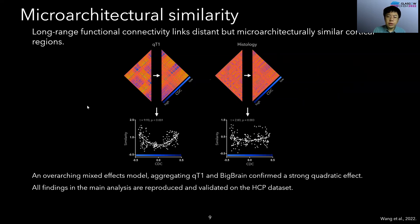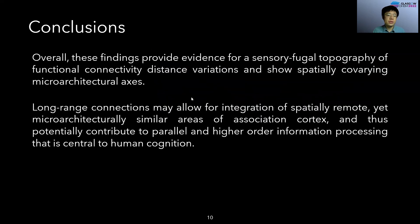Finally, all findings from the main analysis were reproduced and validated on the HCP dataset. Overall, these findings provide evidence for a sensory-to-frontal topography of functional connectivity distance variations and show spatially covarying macroarchitectural axes. Long-range connections may allow for integration of spatially remote yet macroarchitecturally similar areas of association cortex, and thus potentially contribute to parallel and higher-order information processing that is central to human cognition.